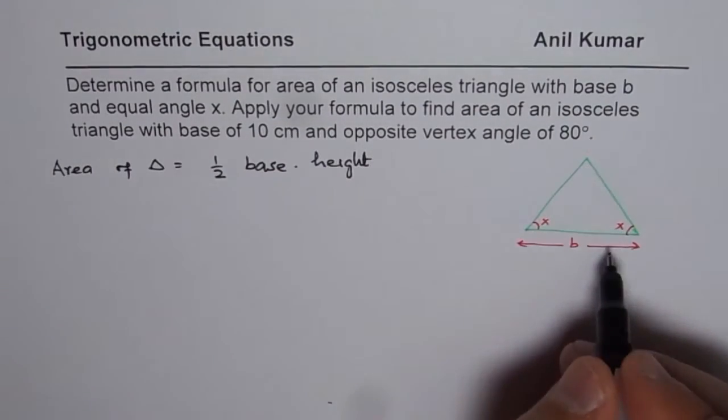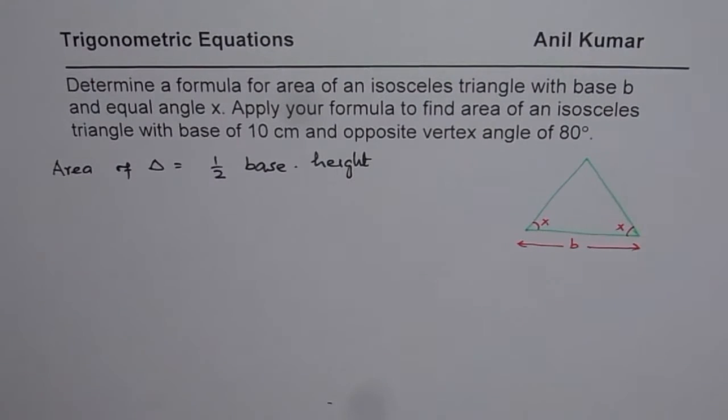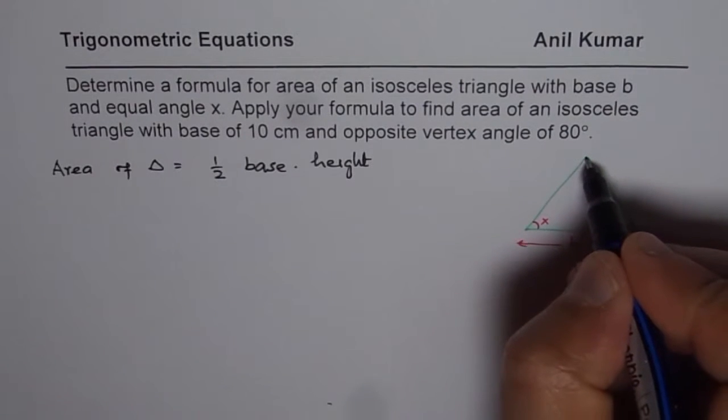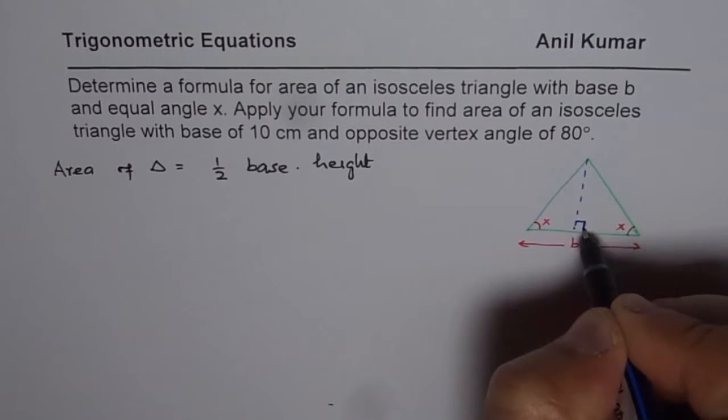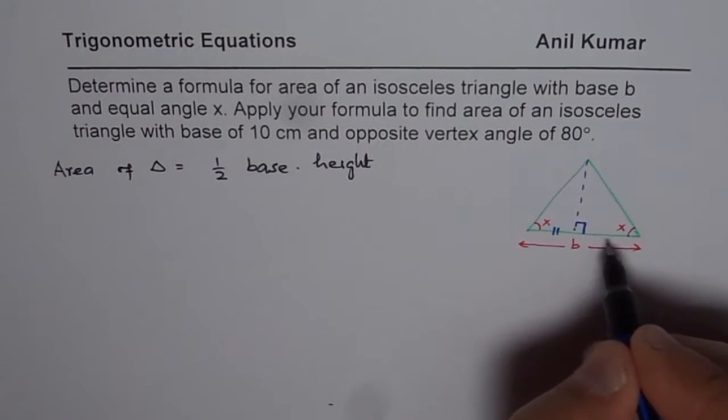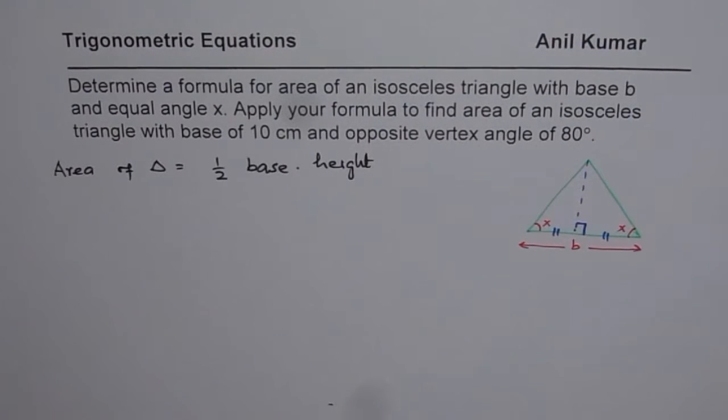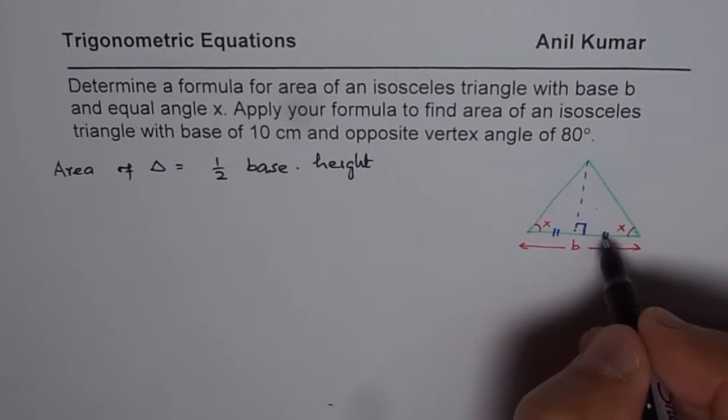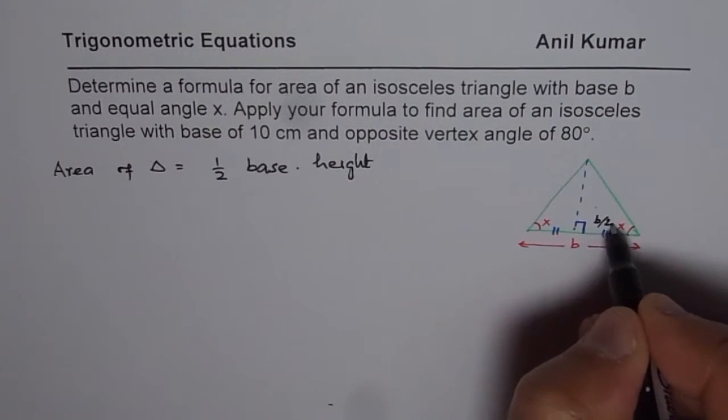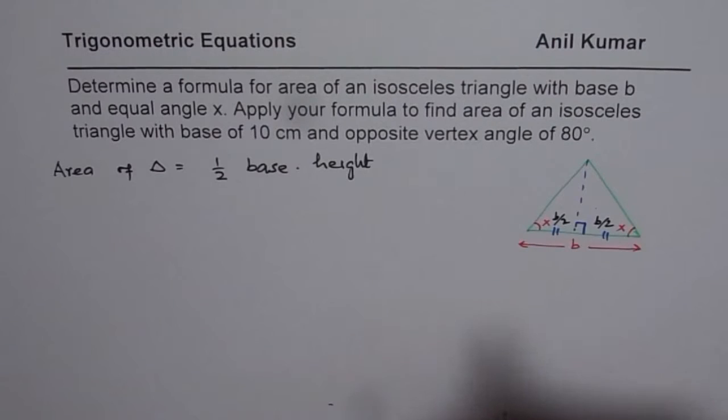Now here base is given to us and we need to find what height is. So let me draw a perpendicular from the opposite vertex. If I draw a perpendicular, these two sides will be equally divided since this is an isosceles triangle. So these two are congruent triangles. Now in that case, this side will be b by 2. This will be also b by 2.